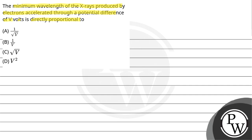Option A, 1 by under root V. Option B, 1 by V. Option C, under root V. And option D, V square.